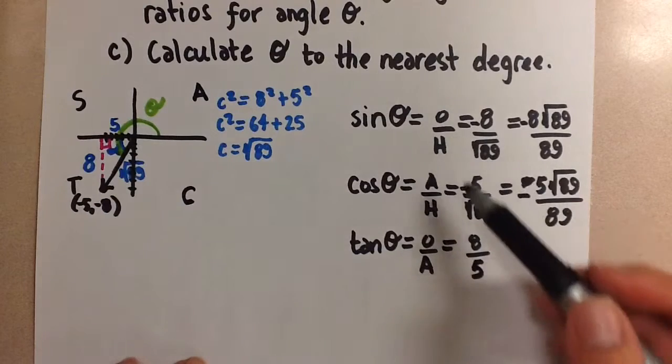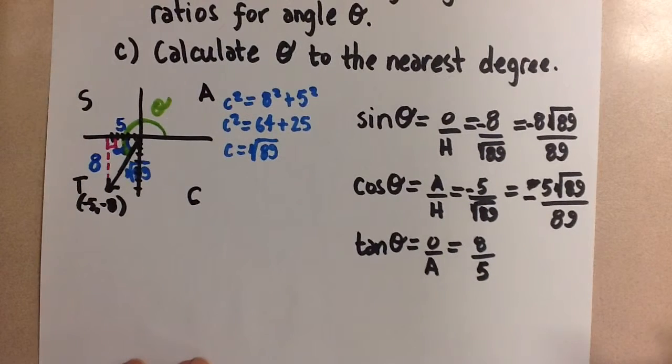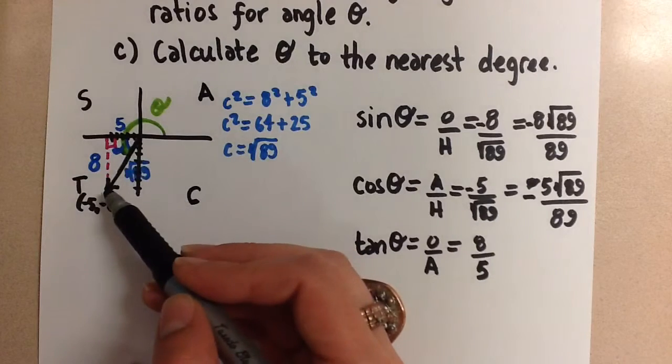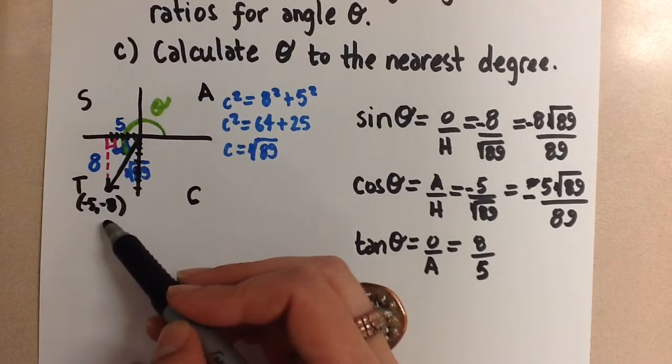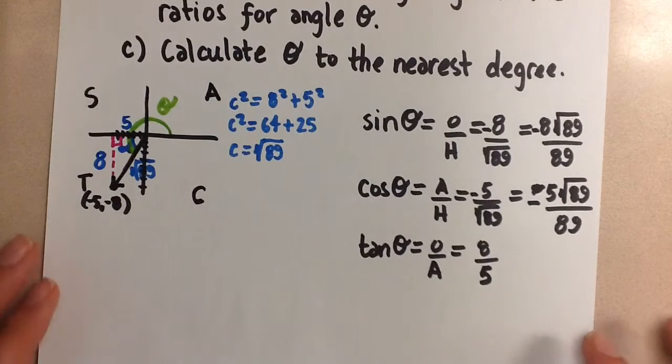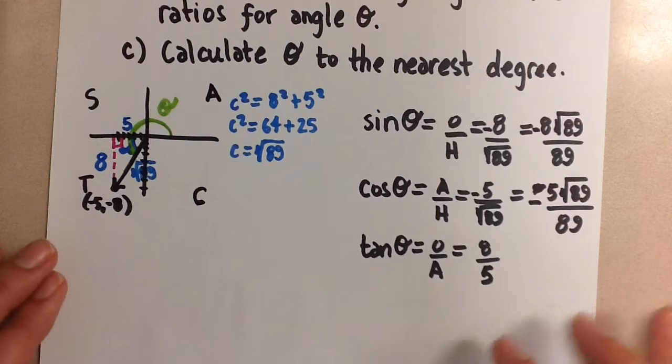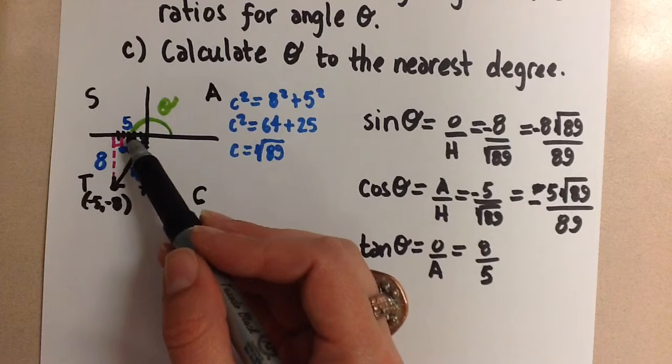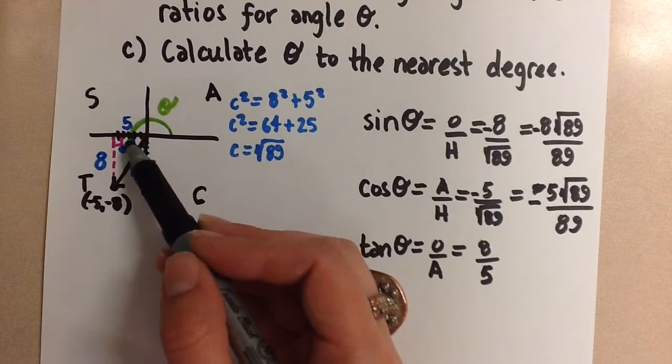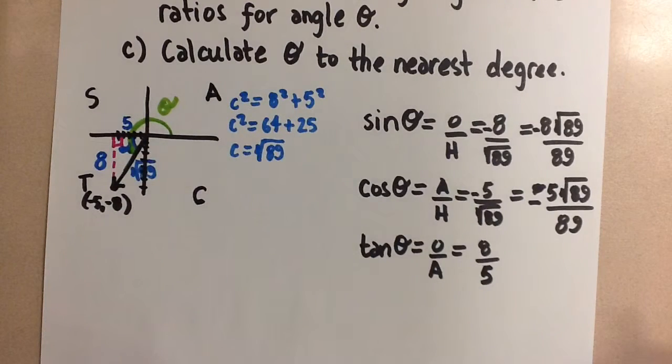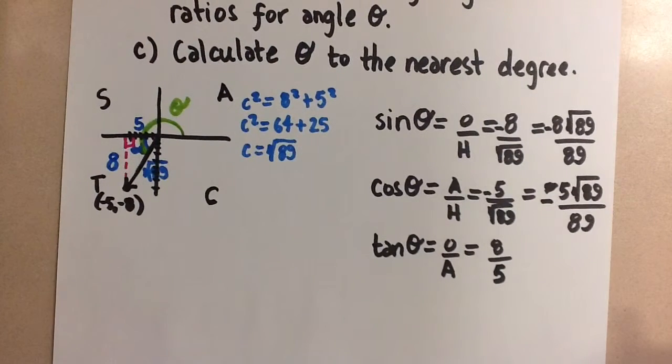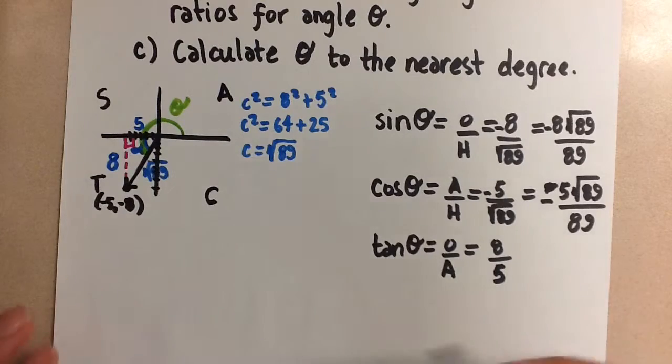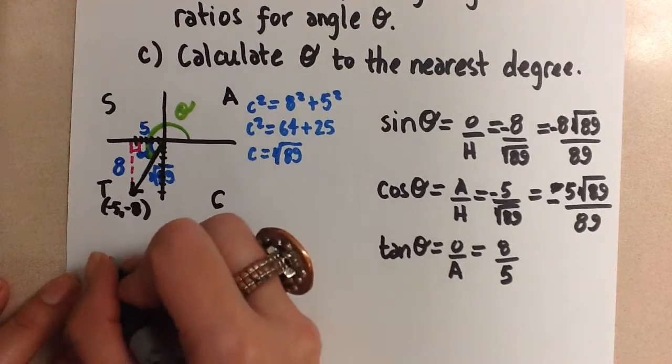So this gives us all three of the trig ratios for this angle theta that has a terminal arm on that negative 5, negative 8 point. Lastly, we want to find out what theta actually is. So we can first calculate what alpha is here as the related acute angle. And then we can use that to calculate what theta is. To find alpha, we can use any of these trig ratios that we just came up with.